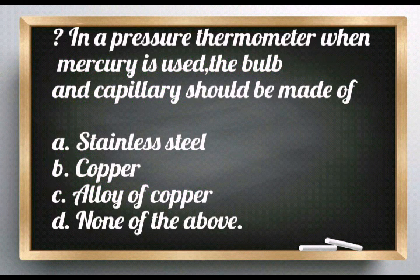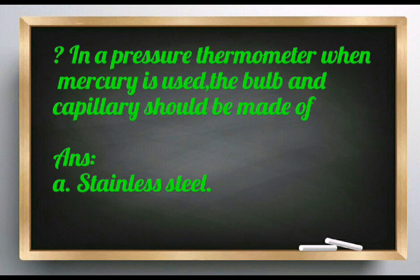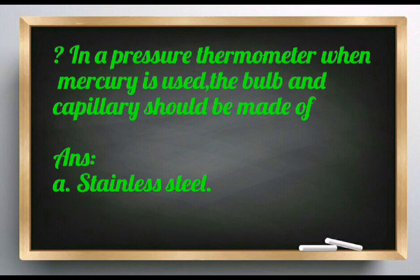Question: In a pressure thermometer, when mercury is used, the bulb and capillary should be made of: stainless steel, copper, alloy of copper, none of the above. In a pressure thermometer using mercury, the bulb and capillary should be made of stainless steel.